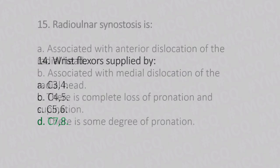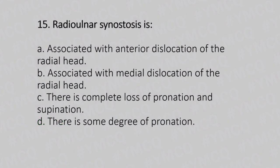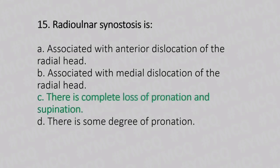Now let's move to question number 15. Radio-ulna synostosis. Option A: associated with anterior dislocation of the radial head. Option B: associated with medial dislocation of the radial head. Option C: there is complete loss of pronation and supination. Option D: there is some degree of pronation. And the answer is Option C, there is complete loss of pronation and supination.